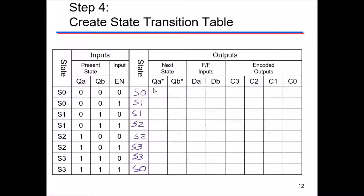Now fill in the next state columns — these are the binary representations of QA and QB for the next state. State zero is 0,0; state one is 0,1; state two is 1,0; state three is 1,1; then back to state zero which is 0,0. These columns simply encode the next state values.